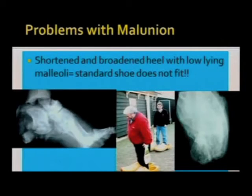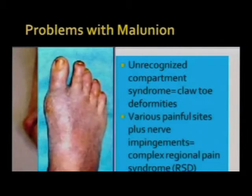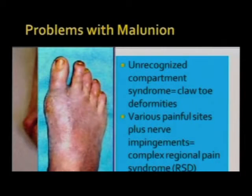A shortened and broadened heel with a low-lying malunion makes standard shoe fitting very difficult. Sometimes a patient could have unrecognized compartment syndrome with claw toe deformities, and sometimes reflex sympathetic dystrophy. These are the gamut of problems which patients can present with.